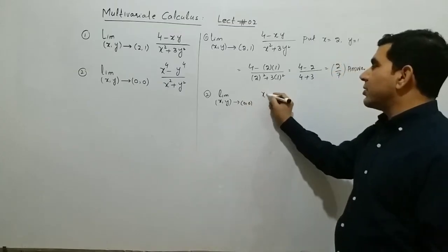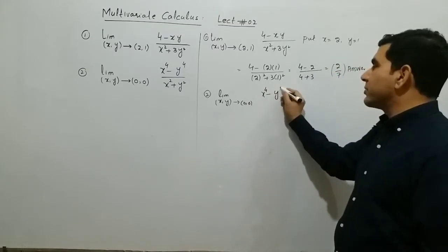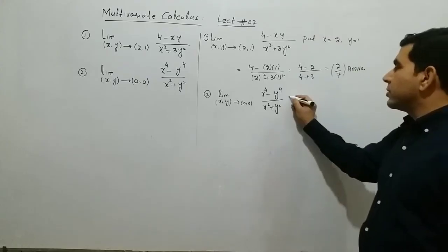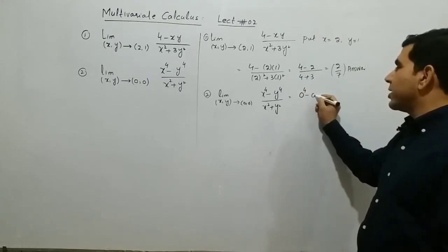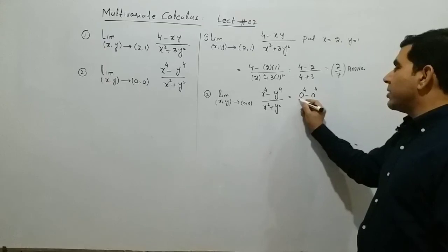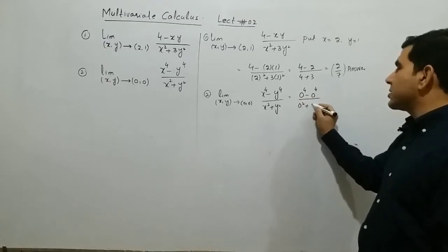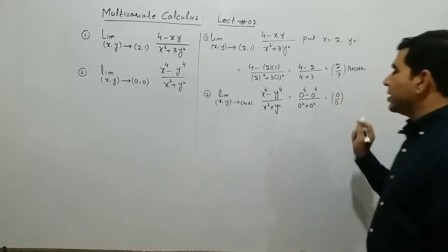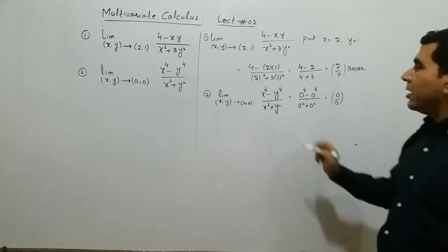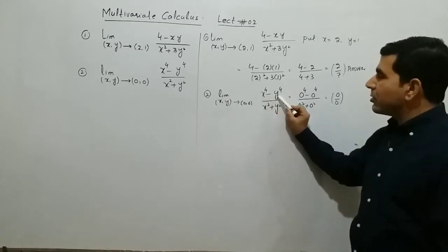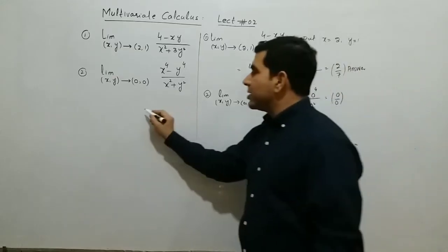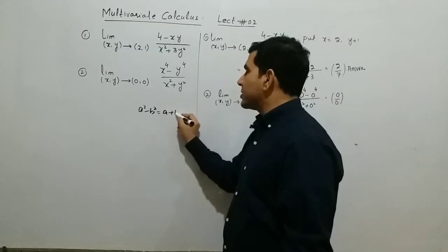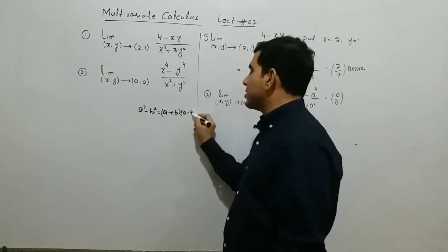Now we solve the other problem: limit as (x, y) approaches (0, 0) of x to the power 4 minus y to the power 4, divided by x squared plus y squared. Putting x equal to 0 and y equal to 0 gives 0 over 0 — this is an indeterminate form. Now we simplify it.